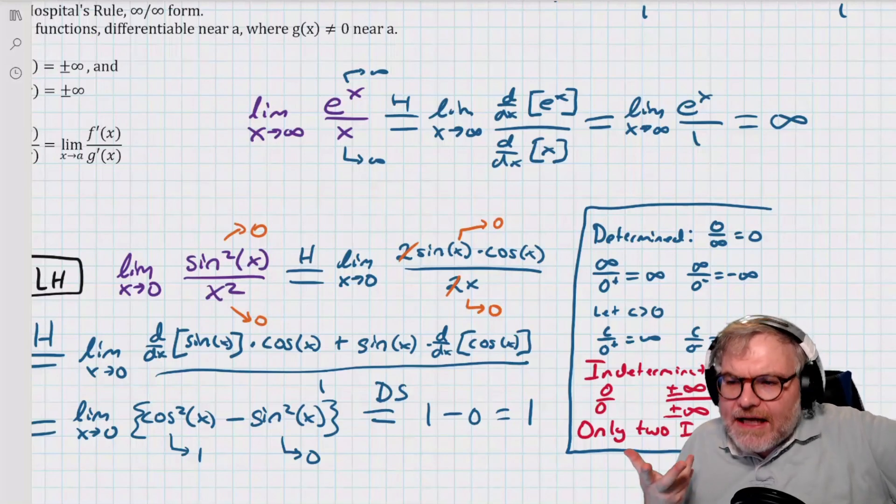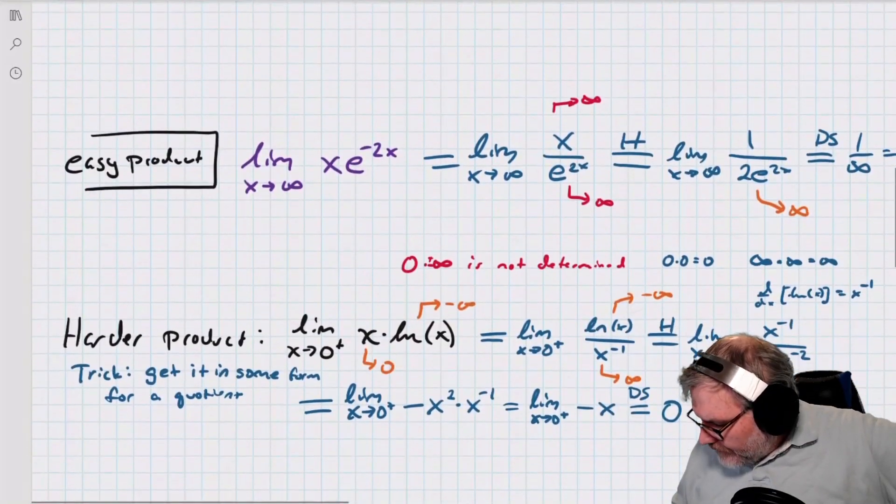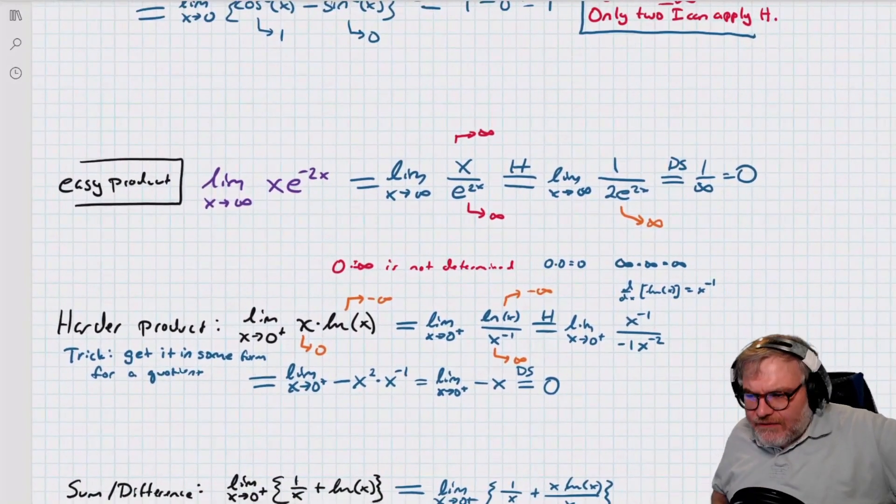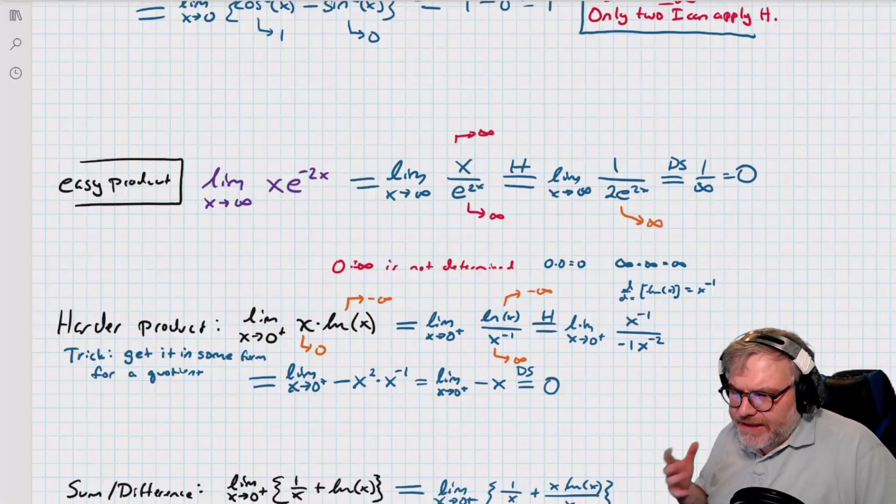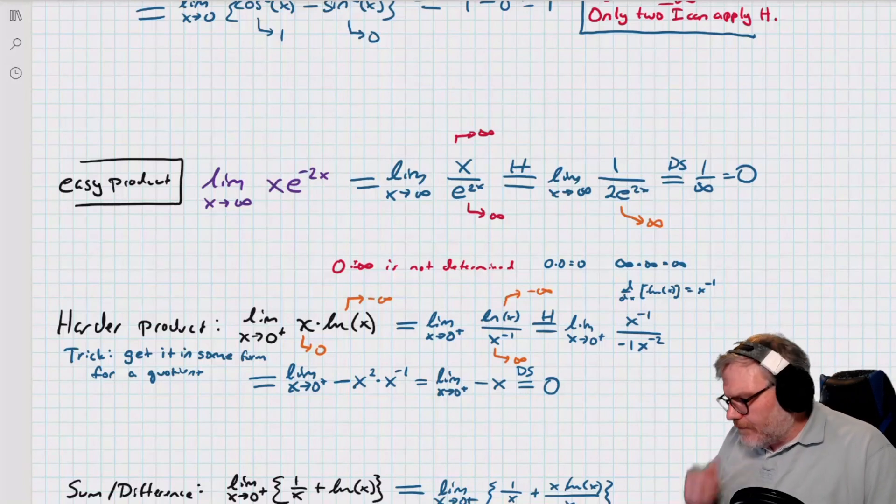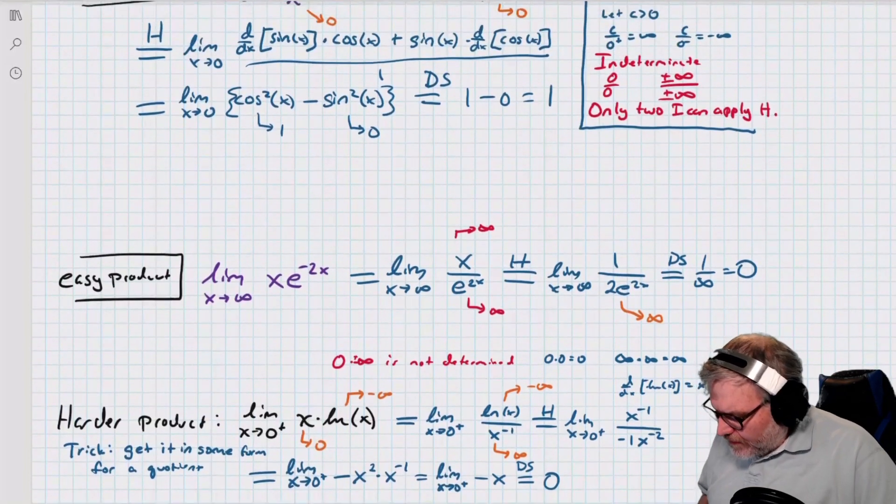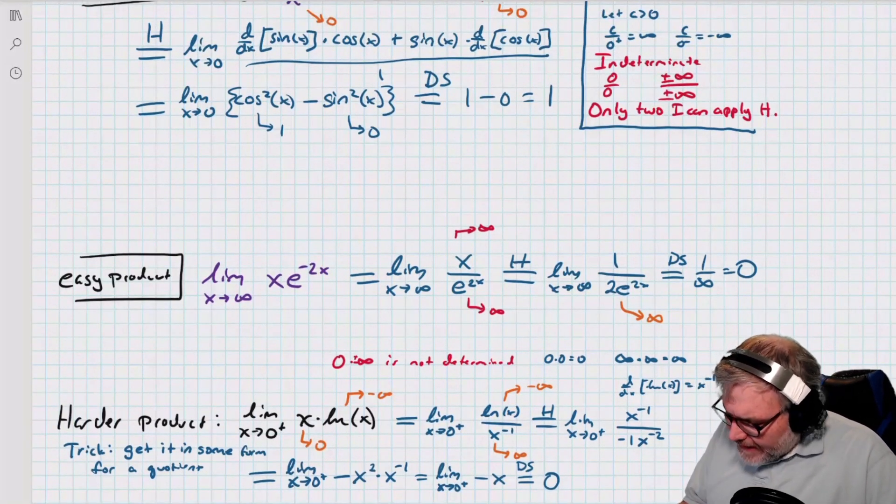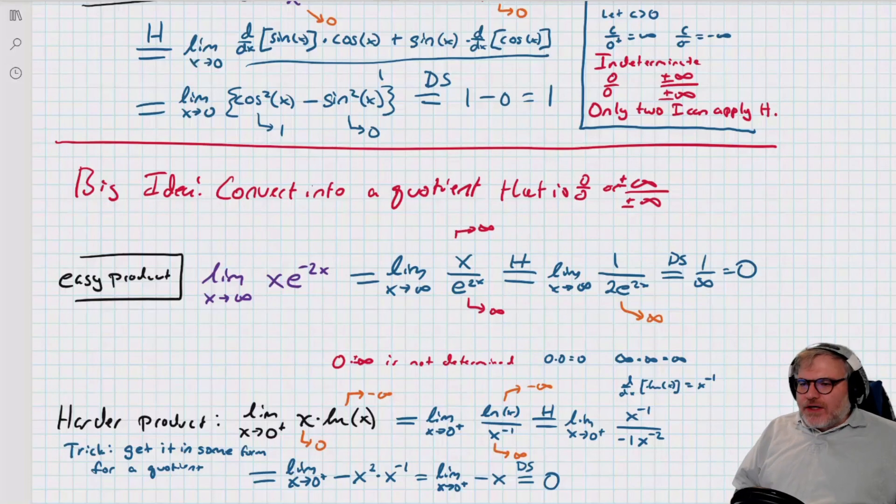Well, I can also have products. And I could do doubles, which we did before. Let's talk about products. We haven't done products yet. We've only done quotients so far. Indeterminate products are things like 0 times infinity. And the trick here is you convert it into quotient rules. So the big idea is that I convert it to something that can be put in the form of 0 over 0 or infinity over infinity.